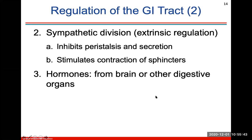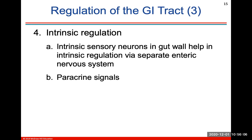The sympathetic division does anything that inhibits digestion — inhibiting peristalsis and secretion of enzymes, and stimulating contraction of sphincters so that food does not pass through them. Hormones from the brain or other digestive organs also help regulate the GI tract. Intrinsic regulation involves sensory neurons in the gut wall; an example of these are paracrine signals.